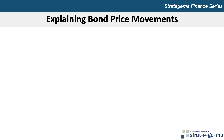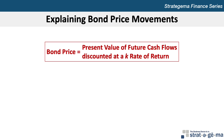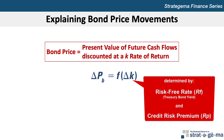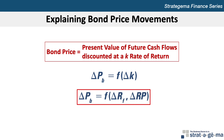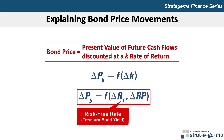Now let's look at explaining bond price movements. The price of a bond should reflect the present value of future cash flows based on a required rate of return, K. The change in bond price, Pb, is a function of the change in the required rate of return, K. Because the required rate of return on a bond is determined by the prevailing risk-free rate, RF — the yield on the treasury bond with the same maturity — and a credit risk premium, RP, the general price movements of bonds can be modeled as: the change in bond price Pb is a function of changes in either the risk-free rate or the risk premium.